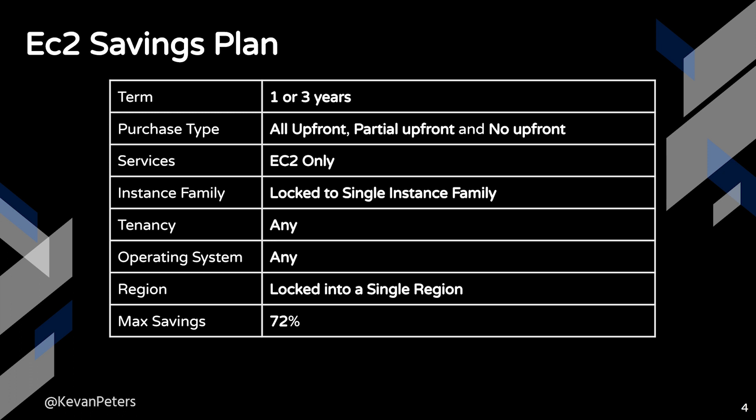EC2 savings plans are a little more in line with what we know as traditional reserved instances. You still get flexibility when it comes to tenancy and operating system, but you're locked into a specific instance family in a specific region. You don't have to pick a specific instance type — you don't have to say C5 2XL — but you still need to specify you want compute for the C5 instance family in a specific region, such as US East 1. You do get a higher potential max savings at 72%.